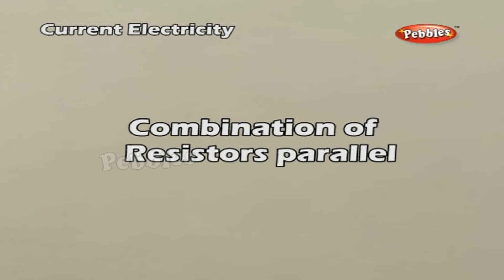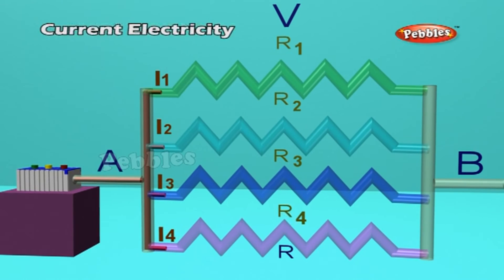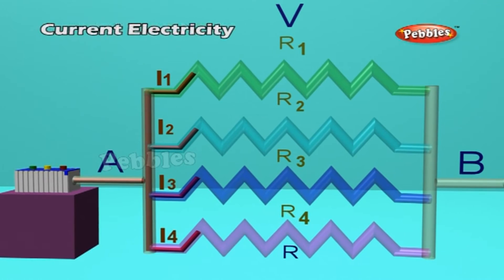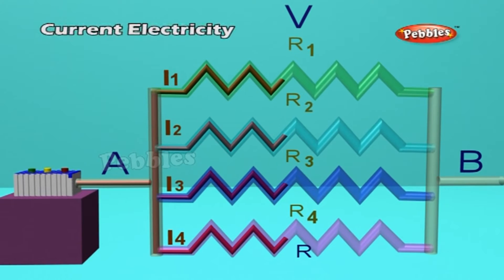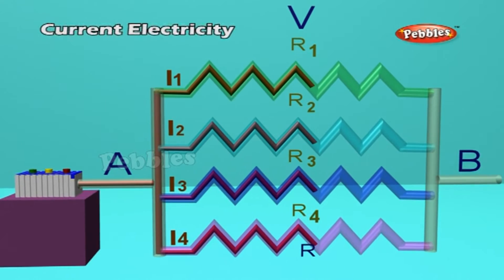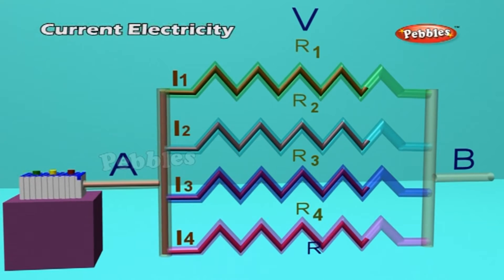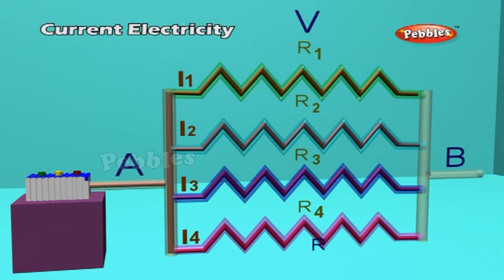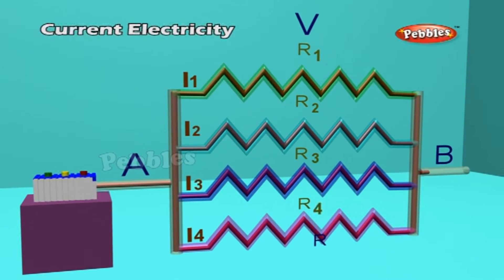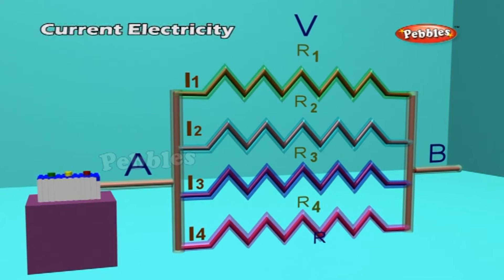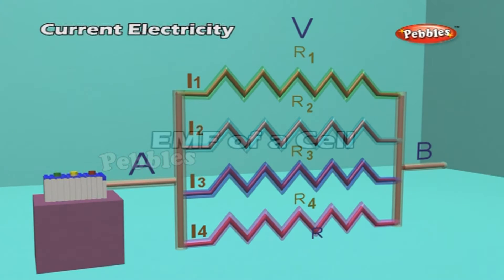Combination of Resistors — Parallel: When all positive poles of different cells are connected together and all negative poles are connected together, and the external resistance R is connected across the positive and negative terminals, such a combination is called a parallel combination of cells, as shown in the figure.